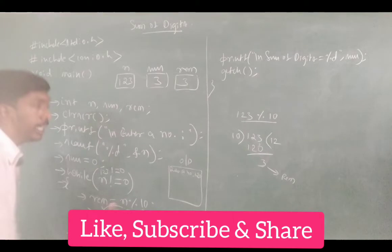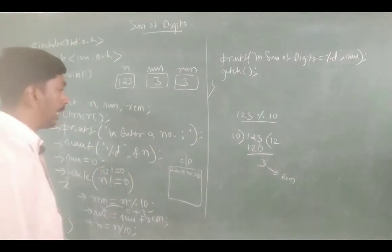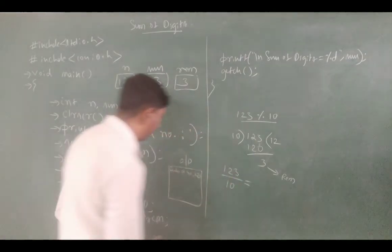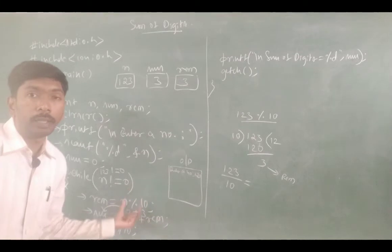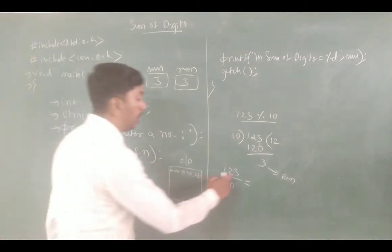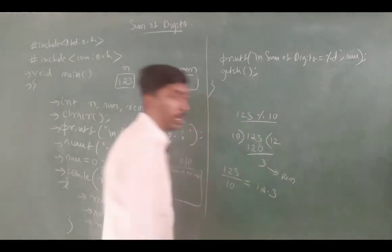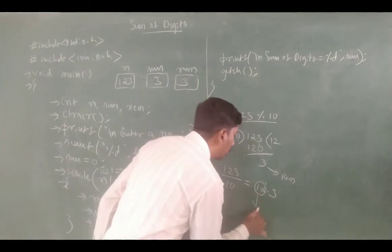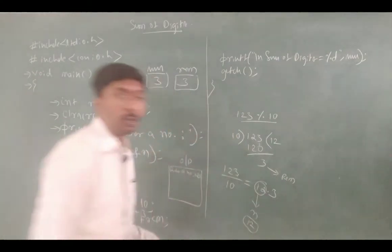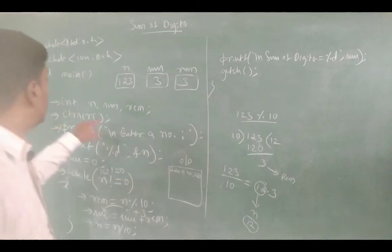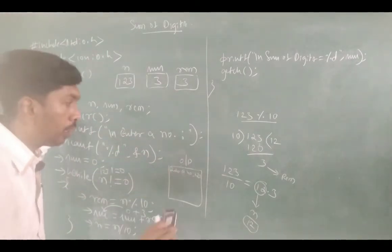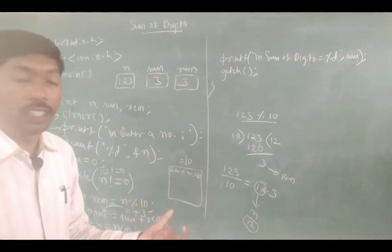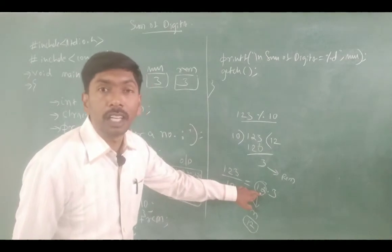Next, n is equal to n divided by 10. This is very important. n value is 123, so 123 divided by 10 equals 12.3. But since n is an integer, only the integer portion is stored, so n becomes 12.